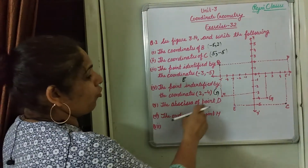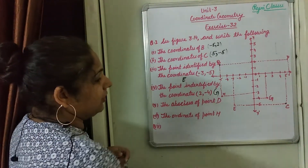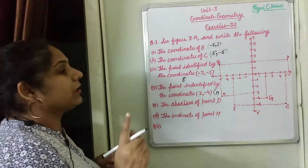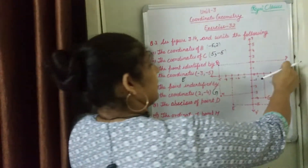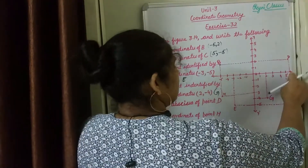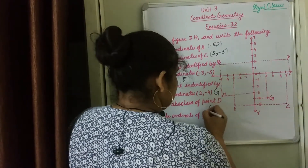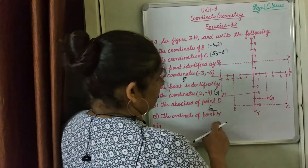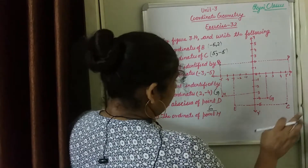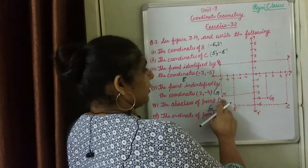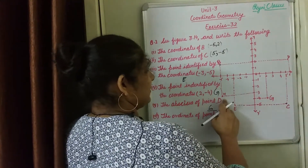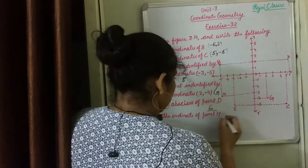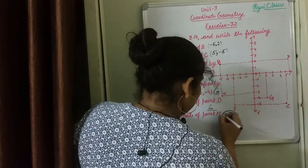Now, the abscissa of point D. Point D is on the X axis — the abscissa is 6. The ordinate of point H: H point is here. Ordinate means Y axis. The coordinate is minus 3.